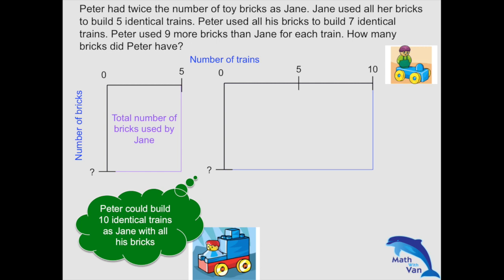But we know that in actual fact, he did not build the same identical trains as Jane's. He built another type, which is 9 more bricks than Jane for each train. And he could only build 7.